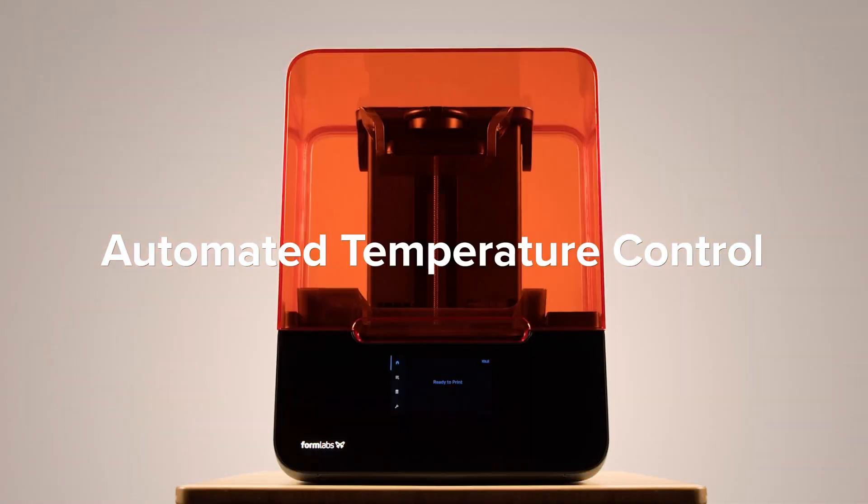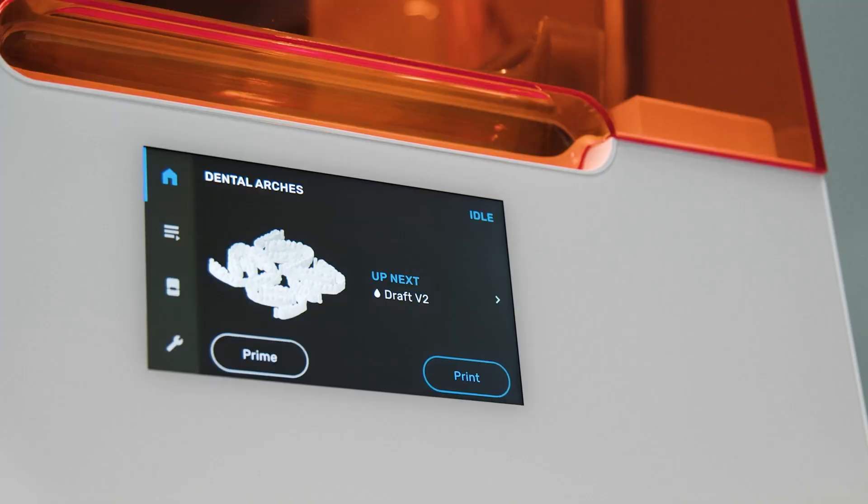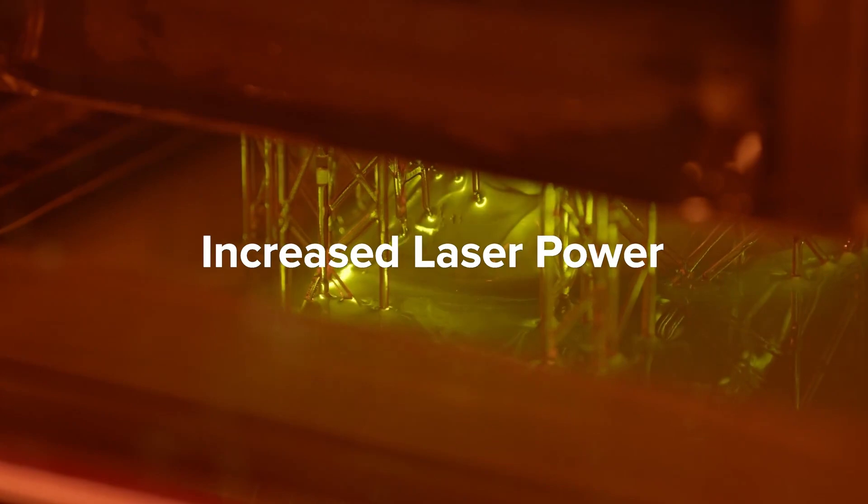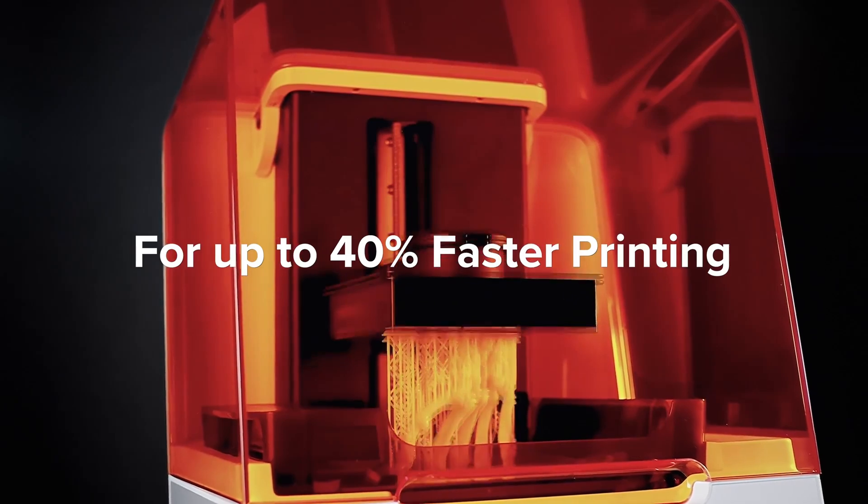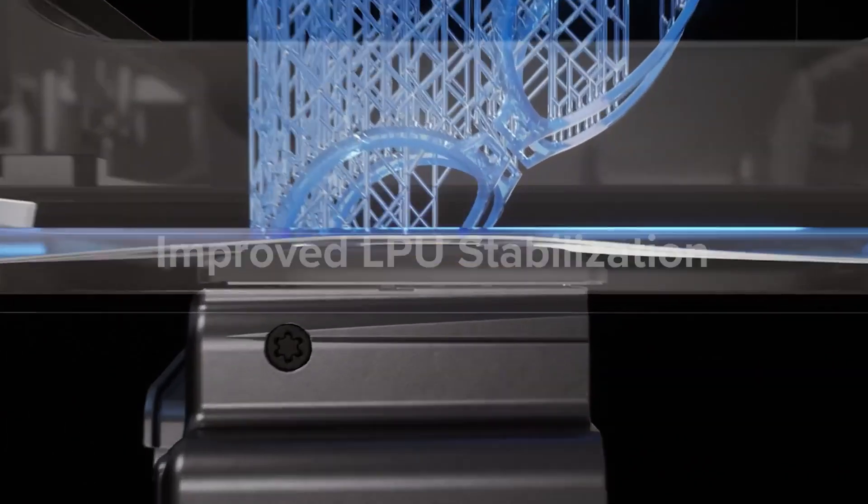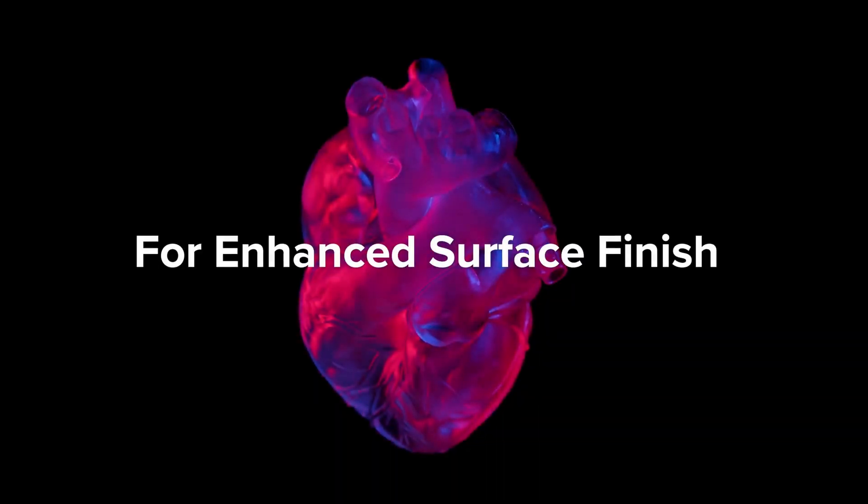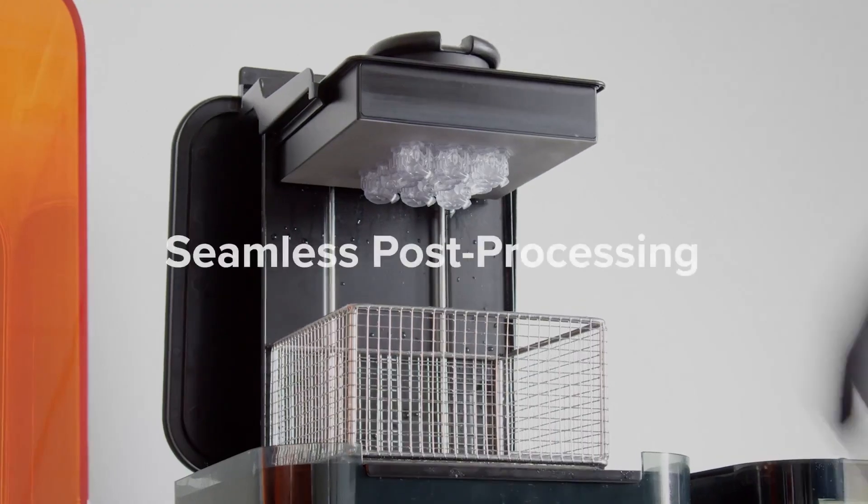Loading up resin is simple, and a floating level sensor keeps close tabs on how much resin is in the print tray, controlling the flow so that just the right amount is used on each job. A more flexible build platform simplifies the task of removing prints. The Form 3 Plus produces speedy prints, but more importantly, the quality of our test prints turned out to be superlative.